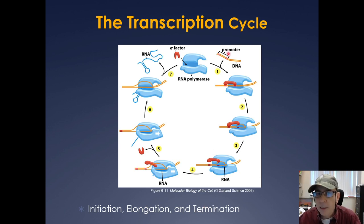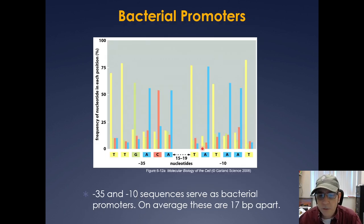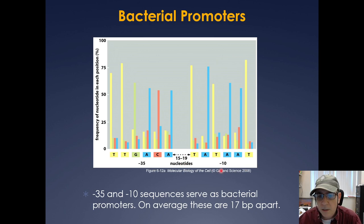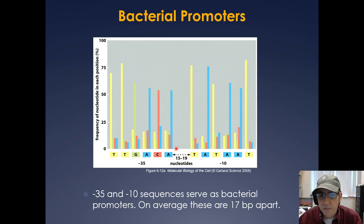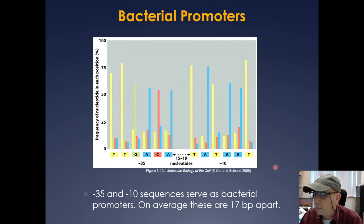In the case of the minus-10 and minus-35 boxes, here's what they look like. There's a consensus sequence — you don't need to memorize this. On average, the minus-10 and minus-35 boxes are 17 base pairs apart, and that's where the sigma factors associate.